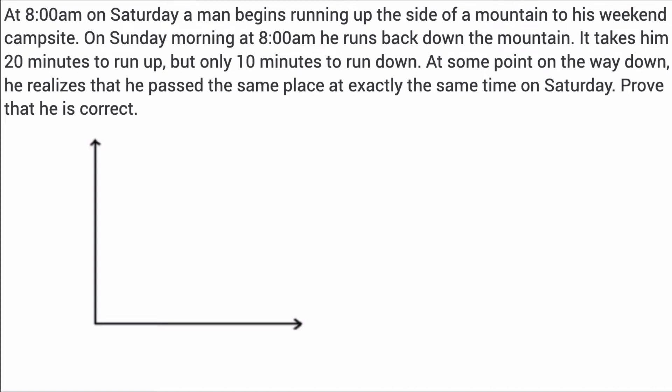The classic problem, often referred to as the mountain climber problem, uses the intermediate value theorem to show that if you go up the side of a mountain starting at 8 a.m. and get to the top at a campsite, then the next day on Sunday morning if you come down at 8 a.m., you'll find that at some point on the way down you're guaranteed to pass the same place at exactly the same time. We're going to demonstrate using the intermediate value theorem why that's true.